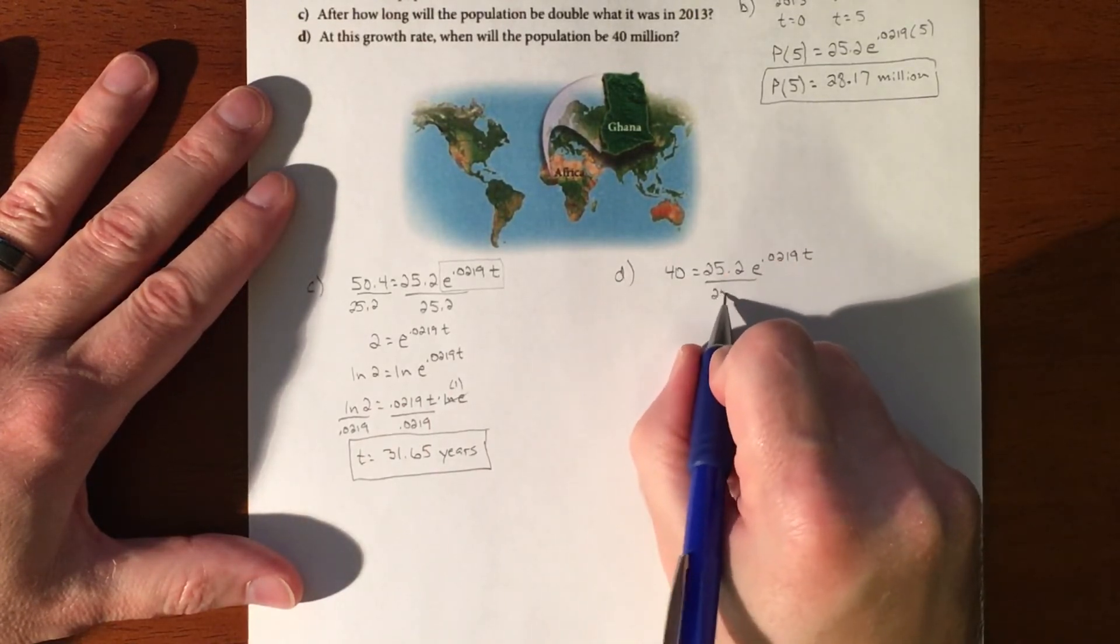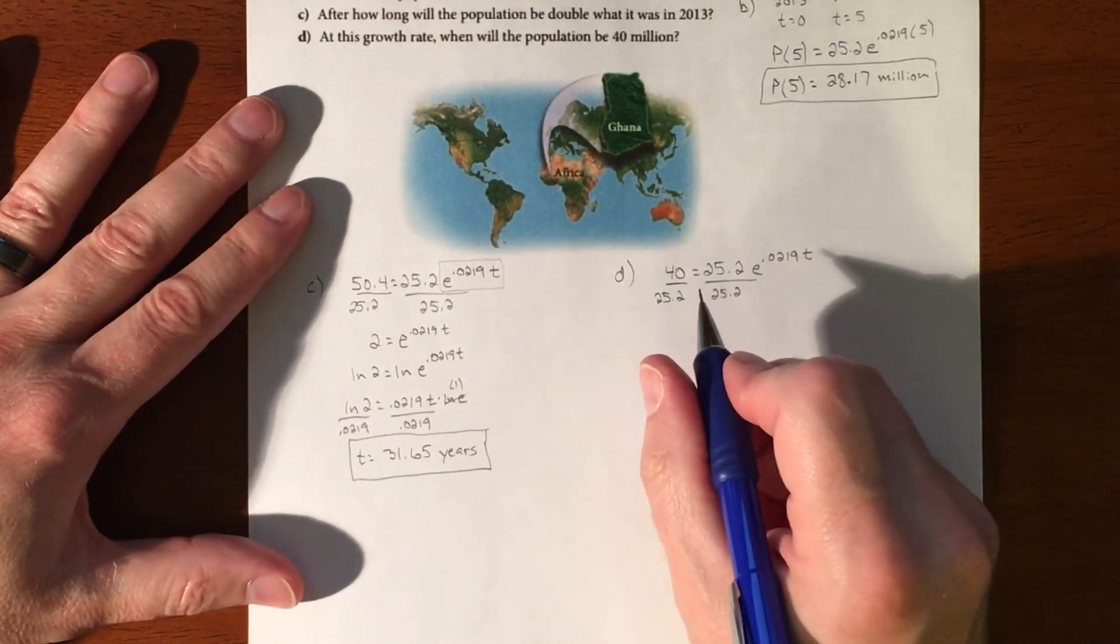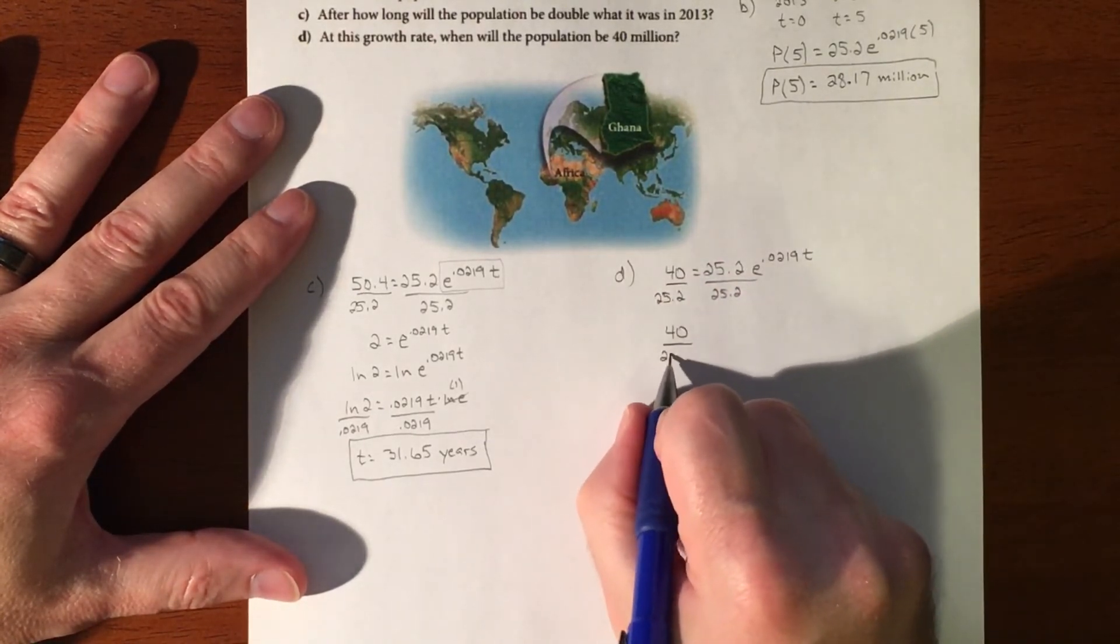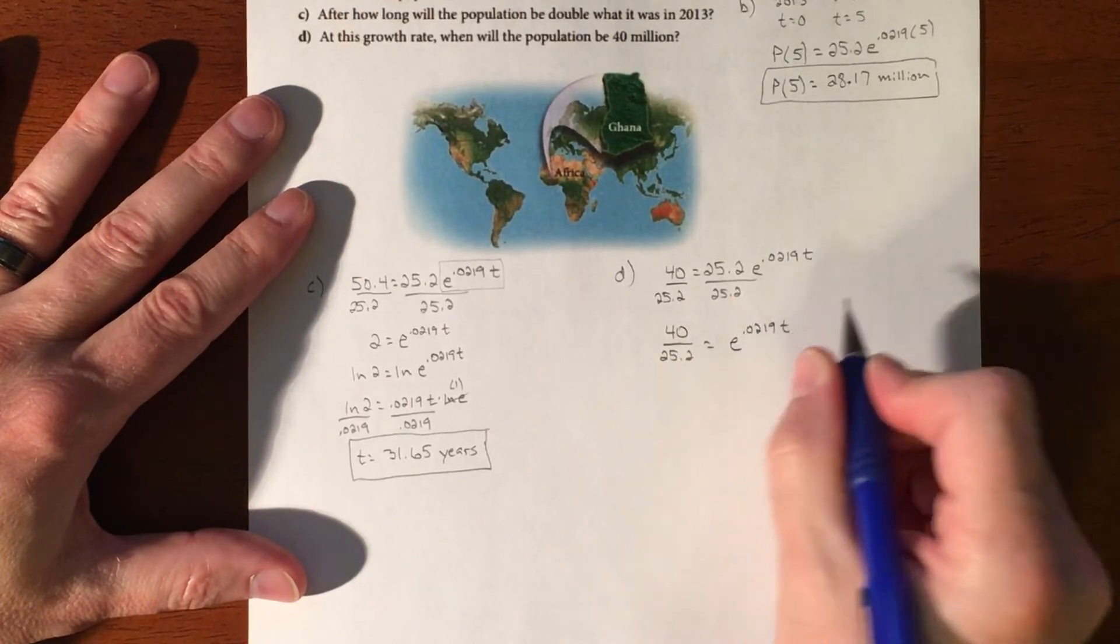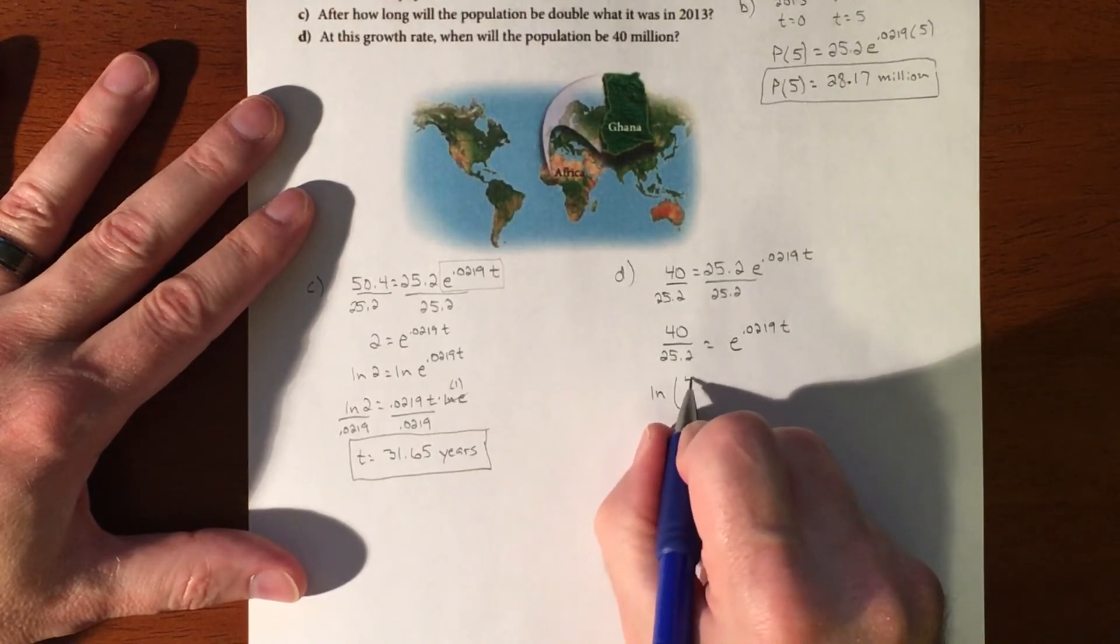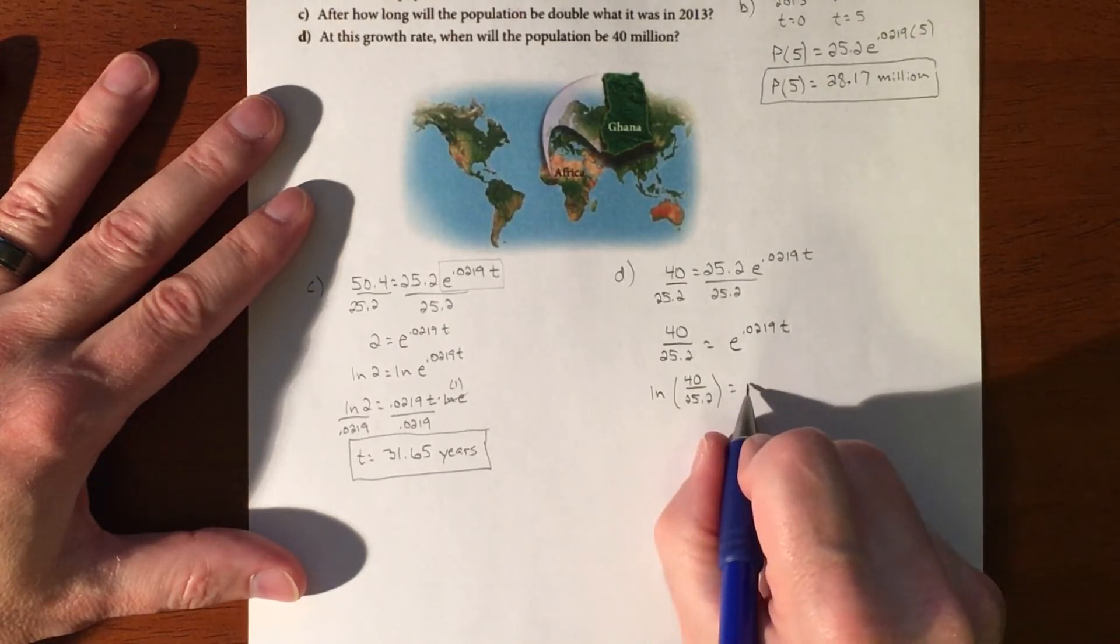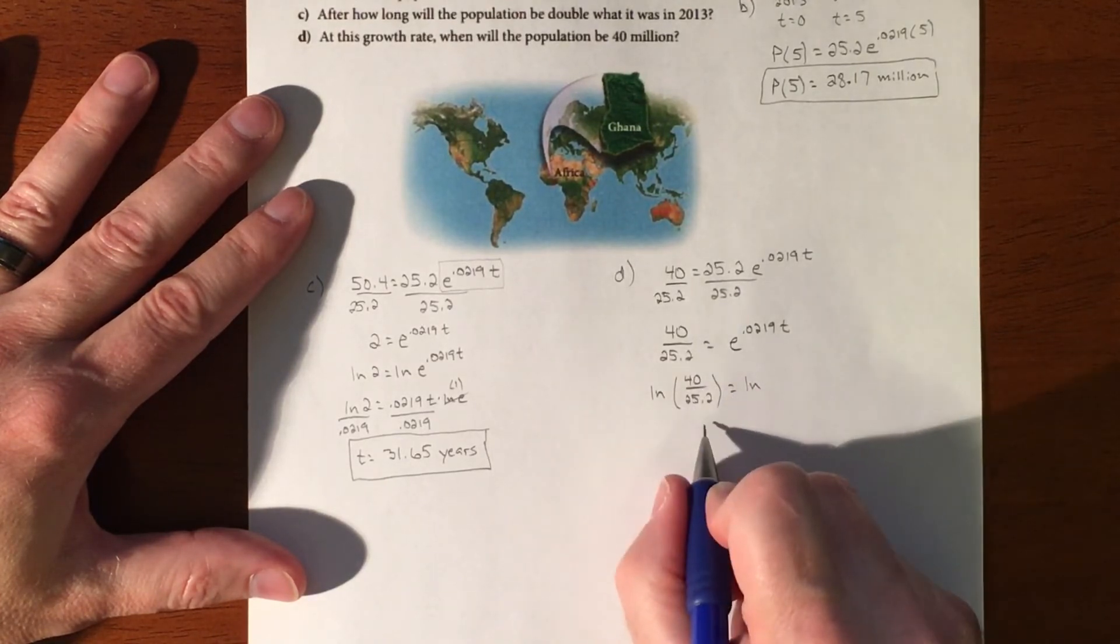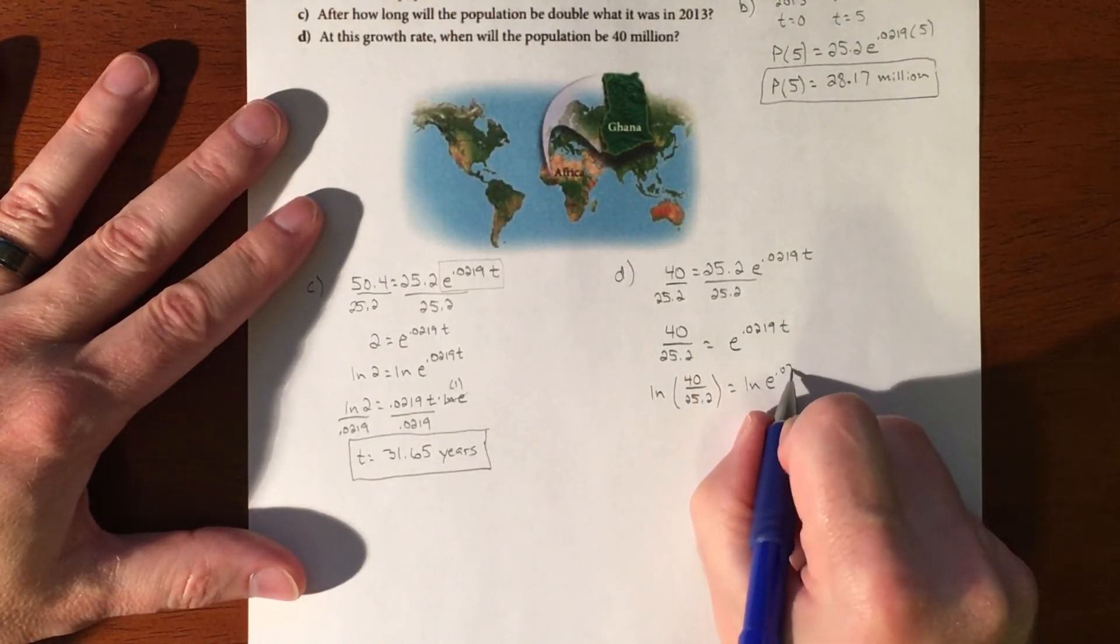So we'll start the same. 25.2 divided by 25.2. I don't know what that is, but I'm just going to leave it. So 40 divided by 25.2 equals e to the 0.0219 T. And then same kind of thing, we're going to log both sides. The reason I leave this is because I want this to be as exact as possible. If I plug that into the calculator and then round it and then we're going to be using that and round that again, it makes our rounding error bigger and bigger. I'm going to try to avoid that.